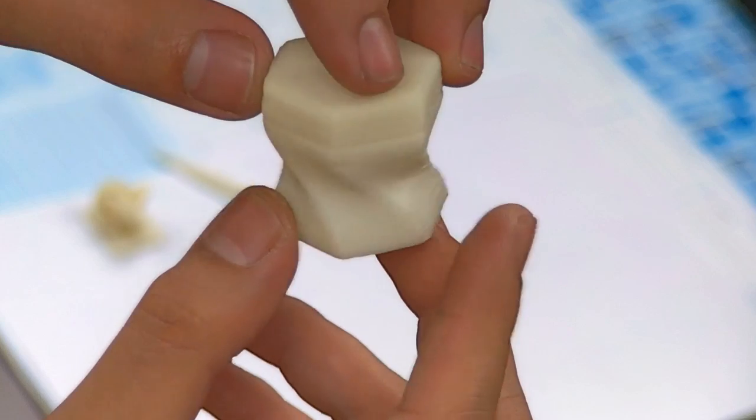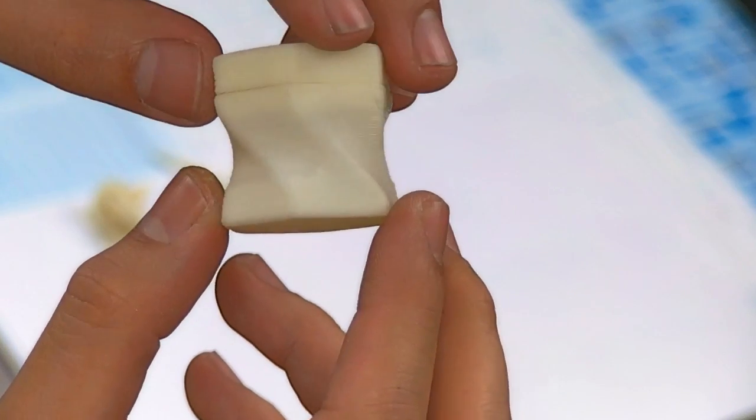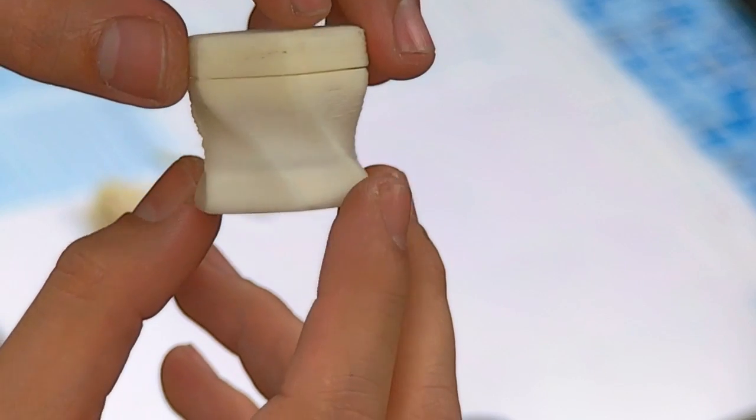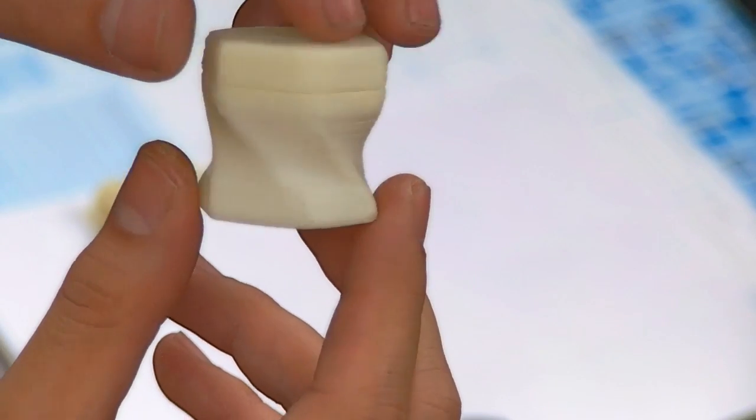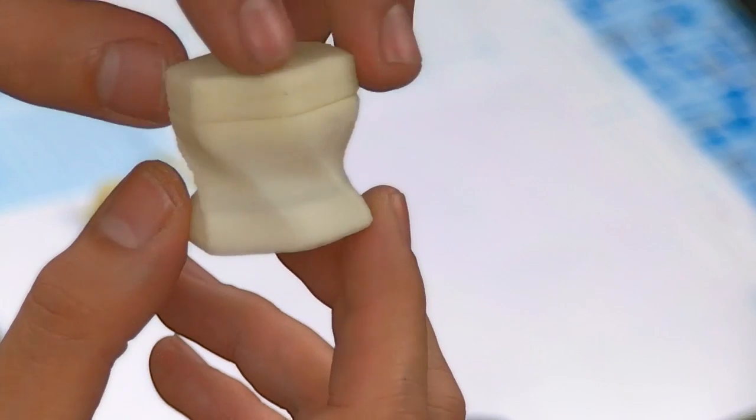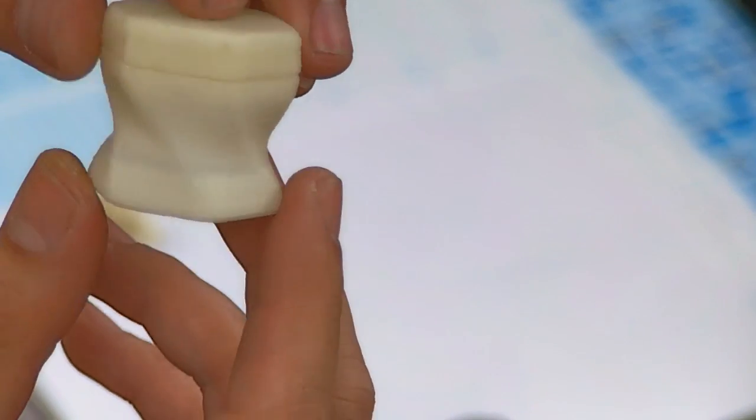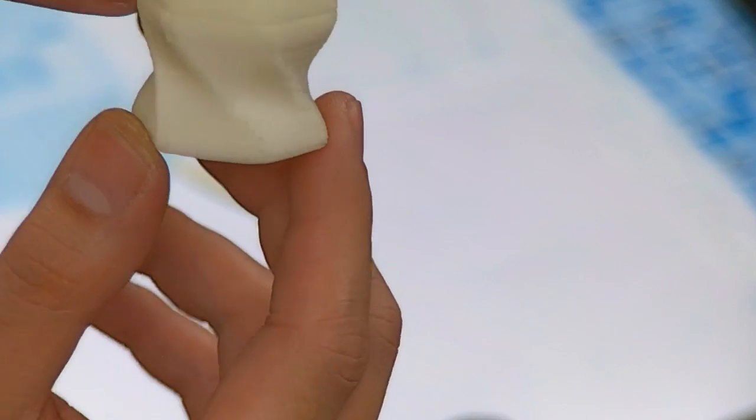What I did with this one was decrease the layer height and the filament feed by 20%, so a thinner strip of filament lays down and creates a more defined print.